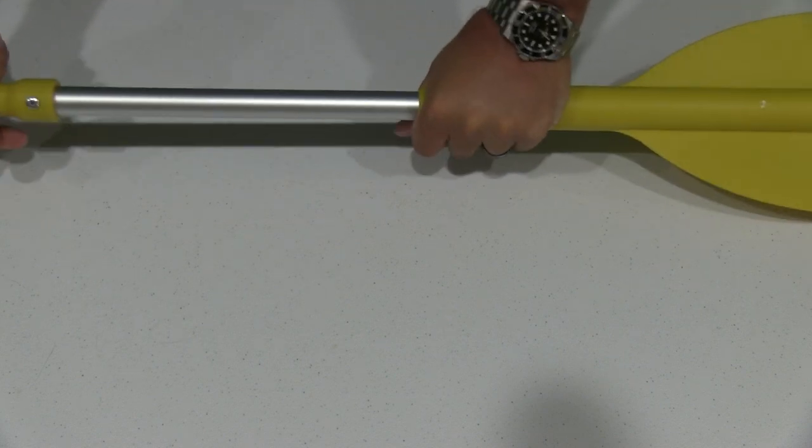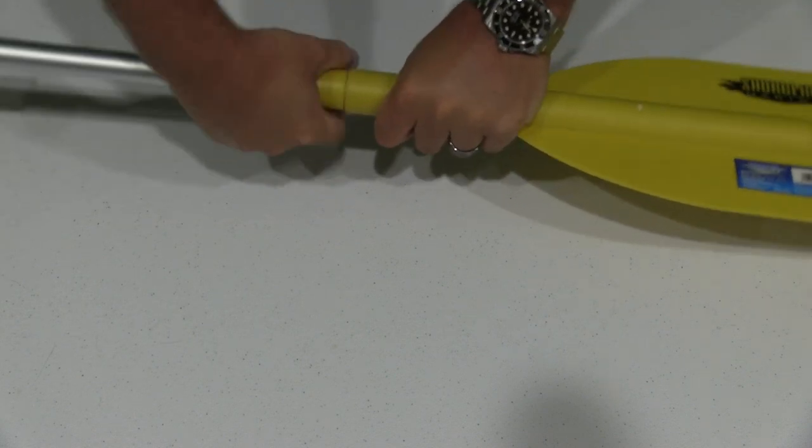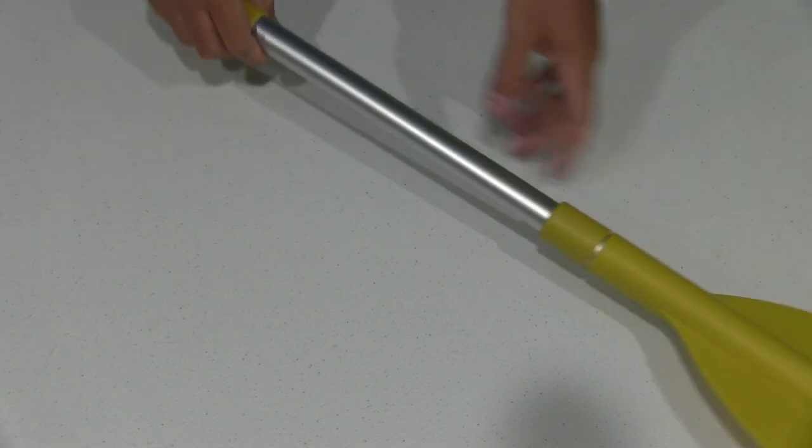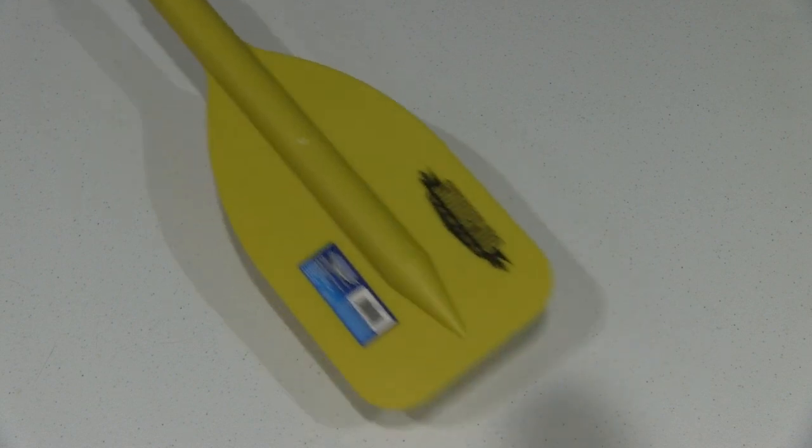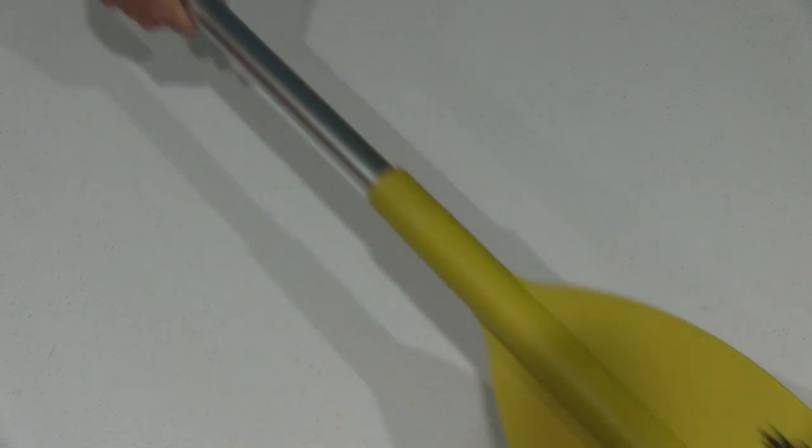So basically you can just pull this out and then lock it. You can pull it again here and lock it. And should you be in a situation where you need to paddle to shore because your boat broke down, this is a convenient way to do that.